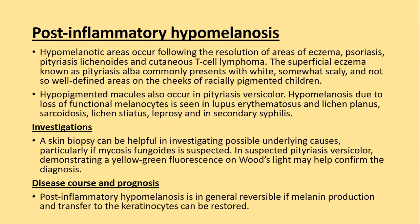Post-inflammatory hypomelanosis: hypermelanotic areas occur following resolution of eczema, psoriasis, pityriasis lichenoides chronica, and cutaneous T-cell lymphoma. The superficial eczema known as pityriasis alba, commonly seen in children, presents as wide, somewhat scaly, ill-defined areas of hypopigmentation on the cheeks in racially pigmented children. Hypermelanotic macules are also seen in pityriasis versicolor, and hypomelanosis due to loss of functional melanocytes is seen in lupus erythematosus, lichen planus, sarcoidosis, lichen striatus, leprosy, and secondary syphilis.